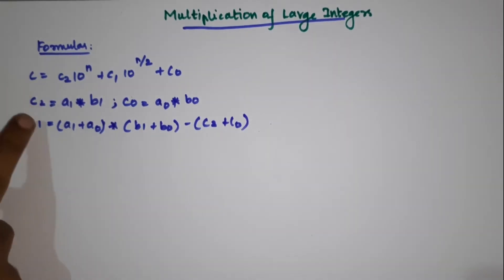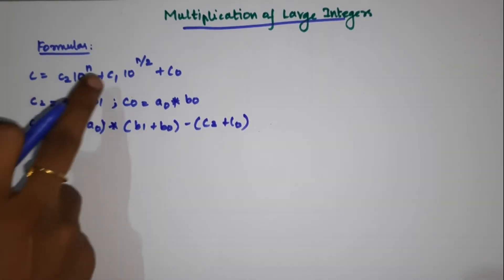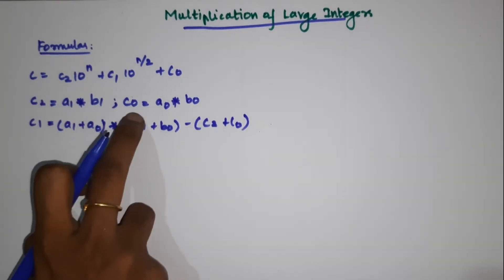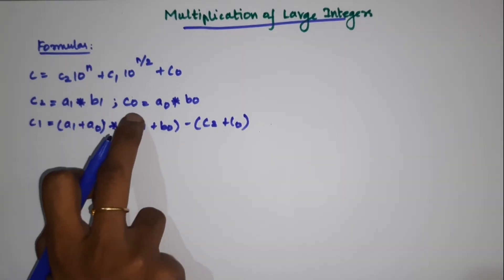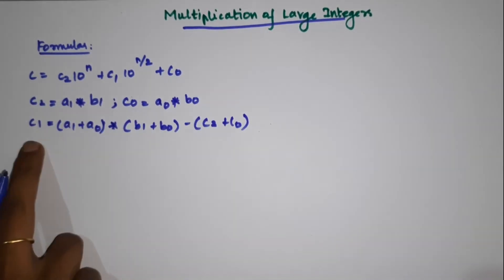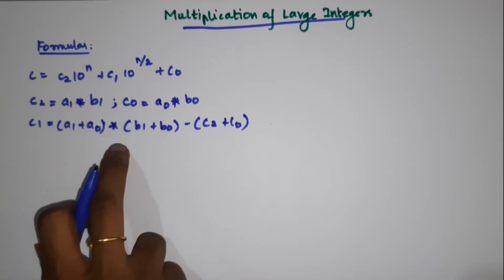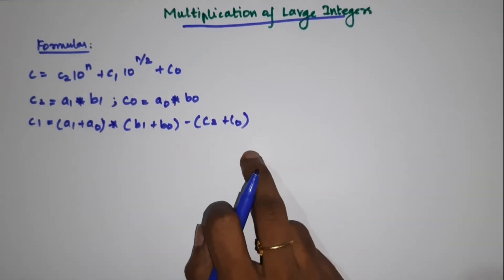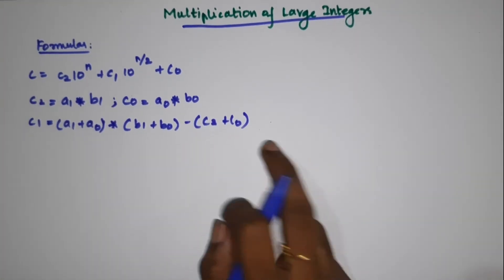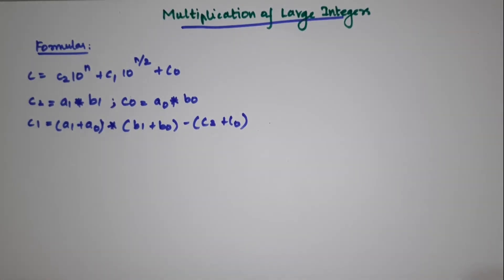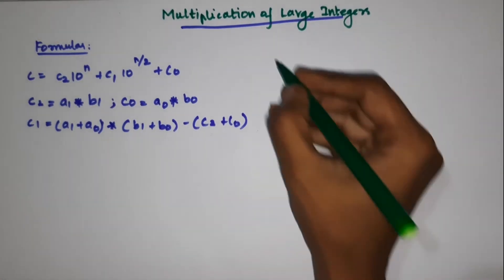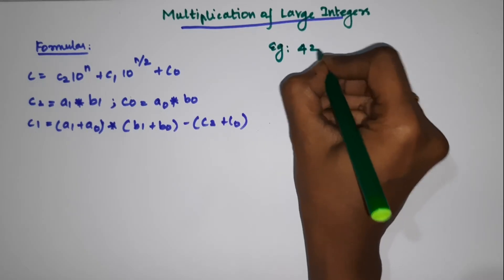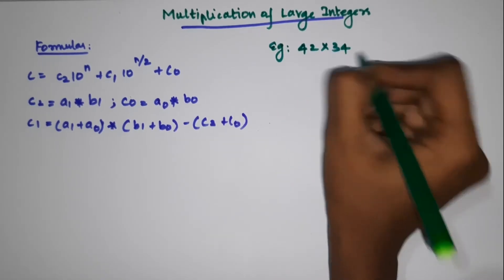We are going to recap: c2 is a1 star b1, c0 is a0 star b0, and c1 is a1 plus a0 times b1 plus b0, minus c2 plus c0. This is the formula. We will now go to the problem. Let's look at the example: 42 into 34.